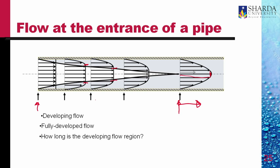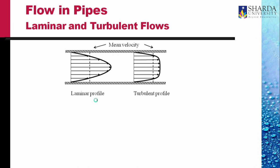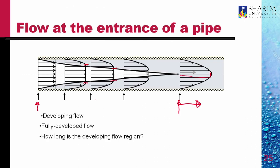How long is this developing flow region? The calculation shows that this length is proportional to the diameter of the pipe and to the Reynolds number. For laminar flow this length could be up to 100 diameters, but in turbulent flows this length is quite short. We will discuss this further later.